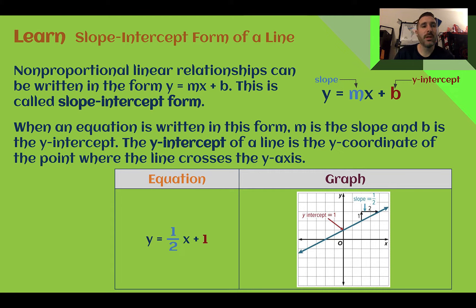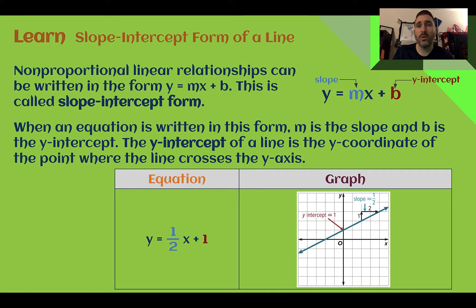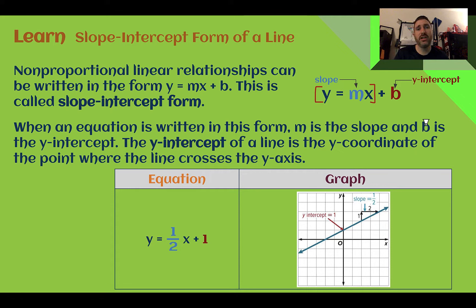Slope intercept form of a line. Non-proportional linear relationships can be written in the form y equals mx plus b. This is called slope intercept form. It should look really close to what we just did with our direct variation equation, which is just y equals mx. The difference here is this one has a value added to the end, which actually is just shifting the line — instead of it going through (0, 0), it shifts it up or down. In this format, m is still the slope, or the unit rate, or the constant of variation.